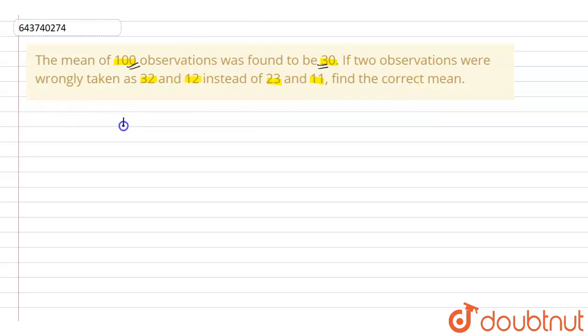So first of all, what we will see is we have mean equal to 30 and the number of observations n is equal to 100. Now we know that the formula for sum of observations is equal to the mean times the number of observations. So it will be equal to 30 times 100, that is equal to 3000. So the sum of our observations before the correction is 3000.